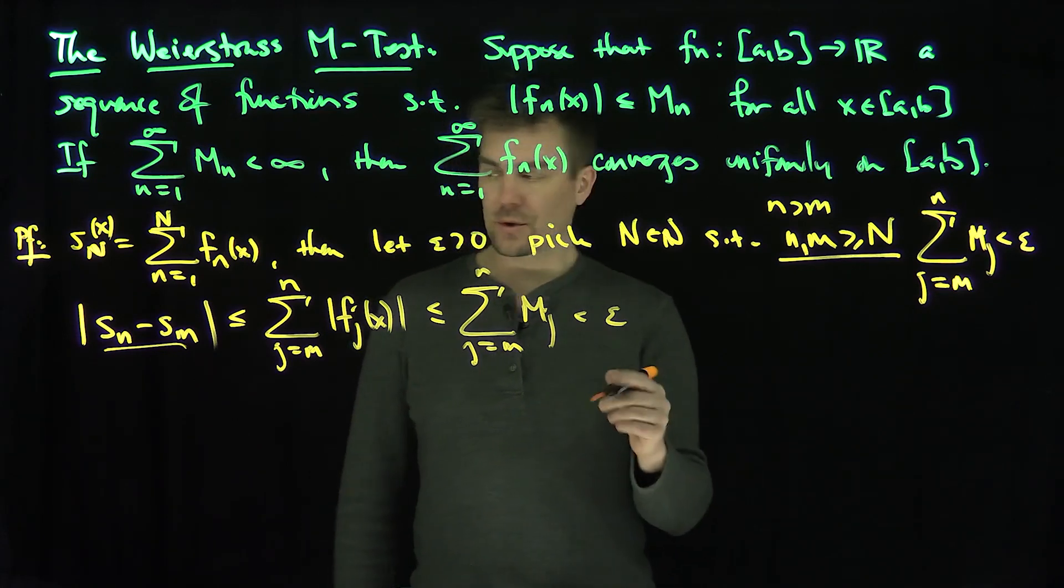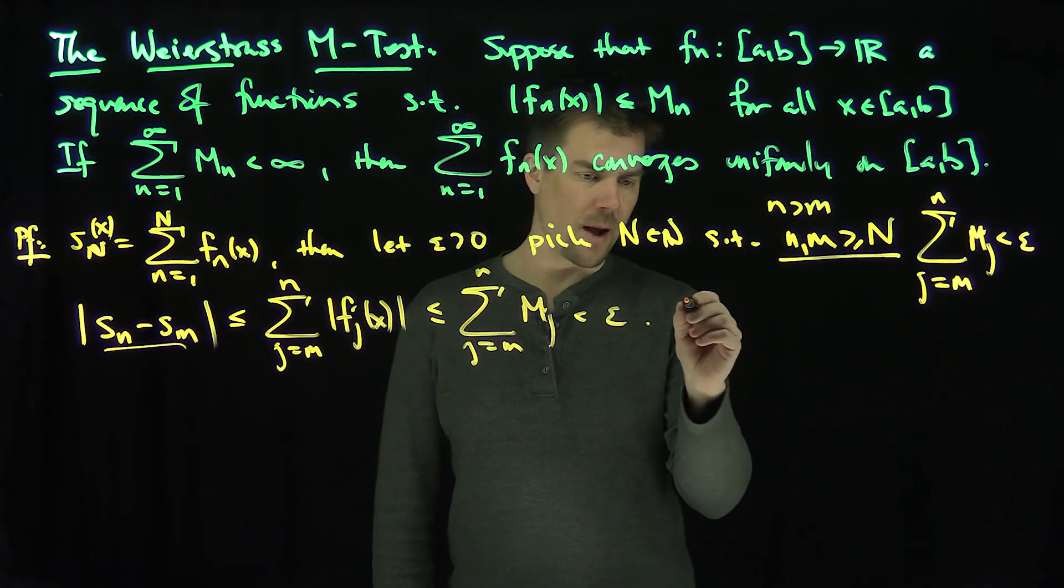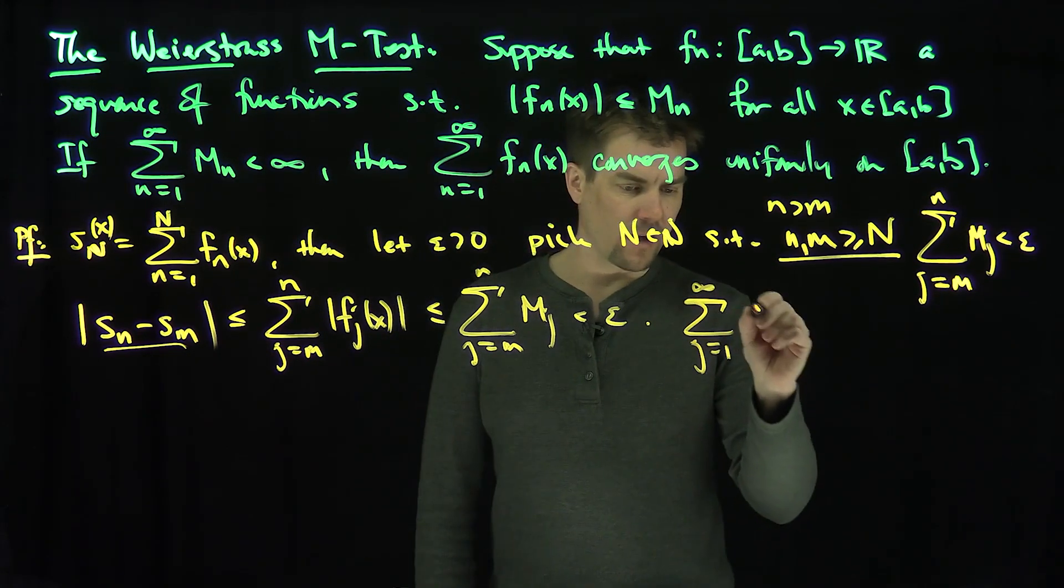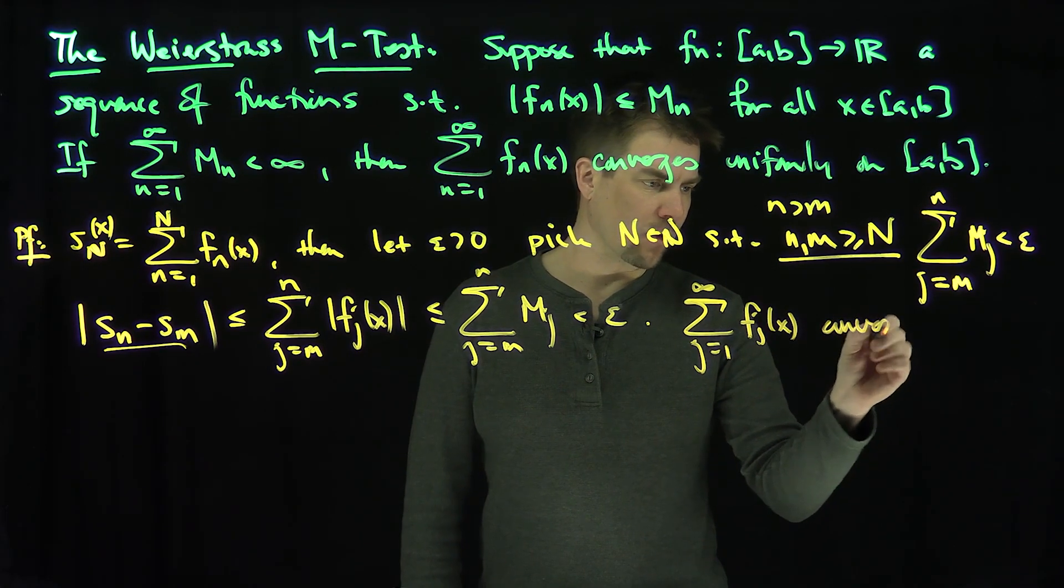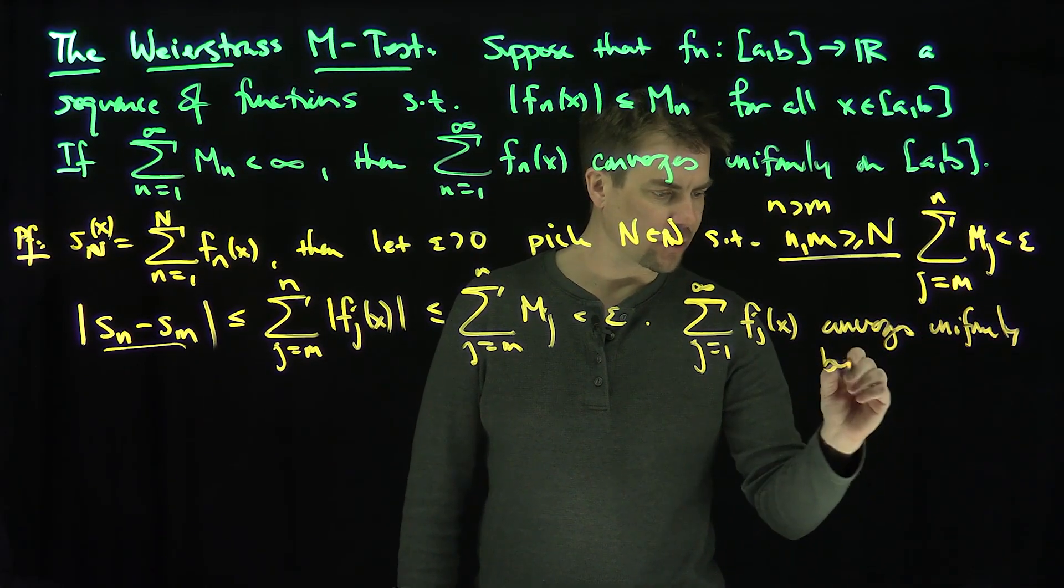So we've just shown that the partial sums, this is true for any x, form a Cauchy sequence. Therefore our sum converges uniformly. Hence the sum from j=1 to infinity of f_j(x) converges uniformly by the Cauchy criterion.